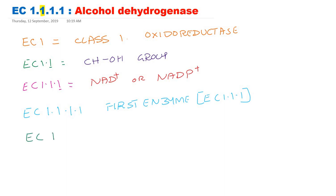If the third digit changes — for example EC 1.1.2 — the acceptor group is different. If the third digit is 1, the acceptor is NAD⁺ or NADP⁺; if the third digit is 2, the acceptor group is cytochrome, so the name of the enzyme will change. Within the same oxidoreductase class there are different sub-subclasses. If the acceptor is NAD or NADP we call it a dehydrogenase. If sub-subclass is 3, the acceptor molecule is oxygen. I will discuss this further when dealing with individual enzyme classes.